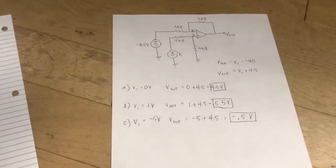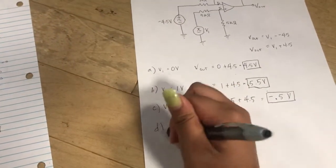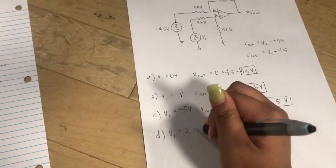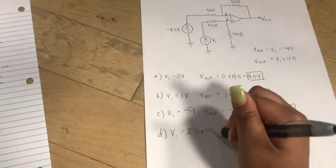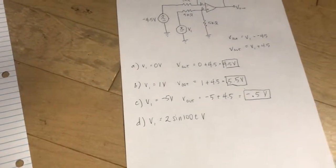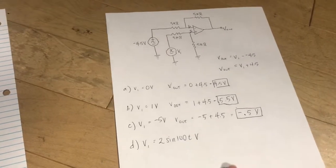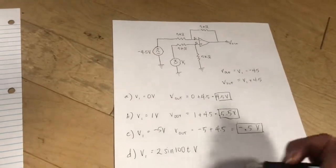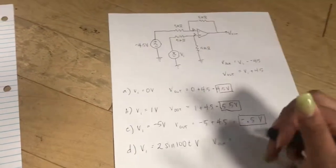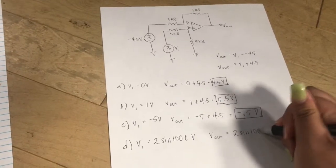This next problem then gets tricky. It gives us V1 equals 2 sine 100 T volts. And you may look at Vout equals 2 sine 100 T plus 4.5 volts.